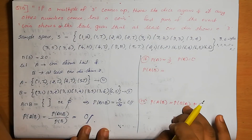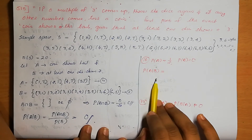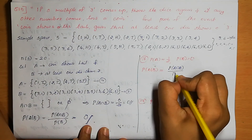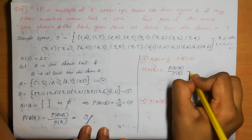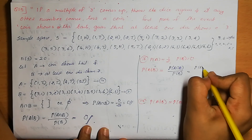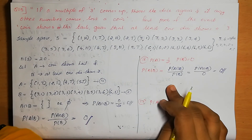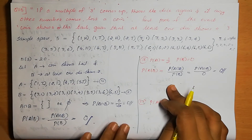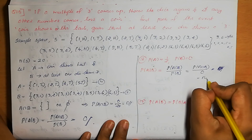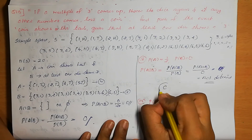Question number 16 is optional type. If P(A) = 1/2, P(B) = 0, find P(A|B). P(A|B) = P(A∩B)/P(B). Since P(B) = 0, we have division by zero, which is not defined. So P(A|B) is not defined — option C is the correct answer.